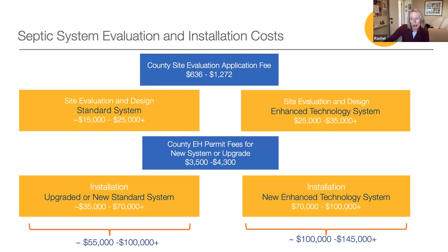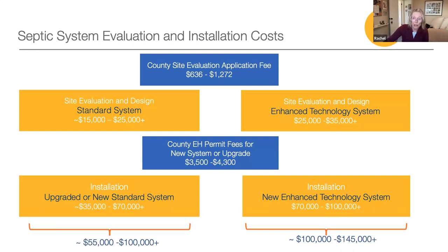So what will the new system cost? There are three kinds of costs associated with these systems: application and permit costs, evaluation and design costs, and the cost of installing the new system. There are complex factors that influence these prices, so we can only offer a range. Environmental health service fees for the site evaluation are between $600 and $1,300, while the septic system permit itself can run between $3,500 and $4,300. In total, environmental health service fees can cost between $4,000 and $6,000 generally speaking.